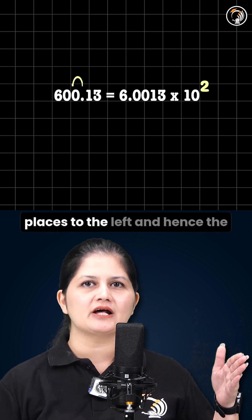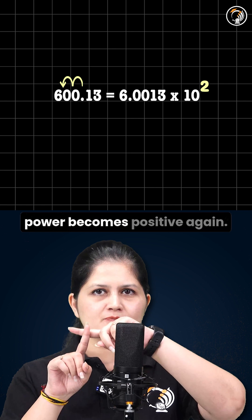Here, decimal is shifted 2 places to the left and hence the power becomes positive again.